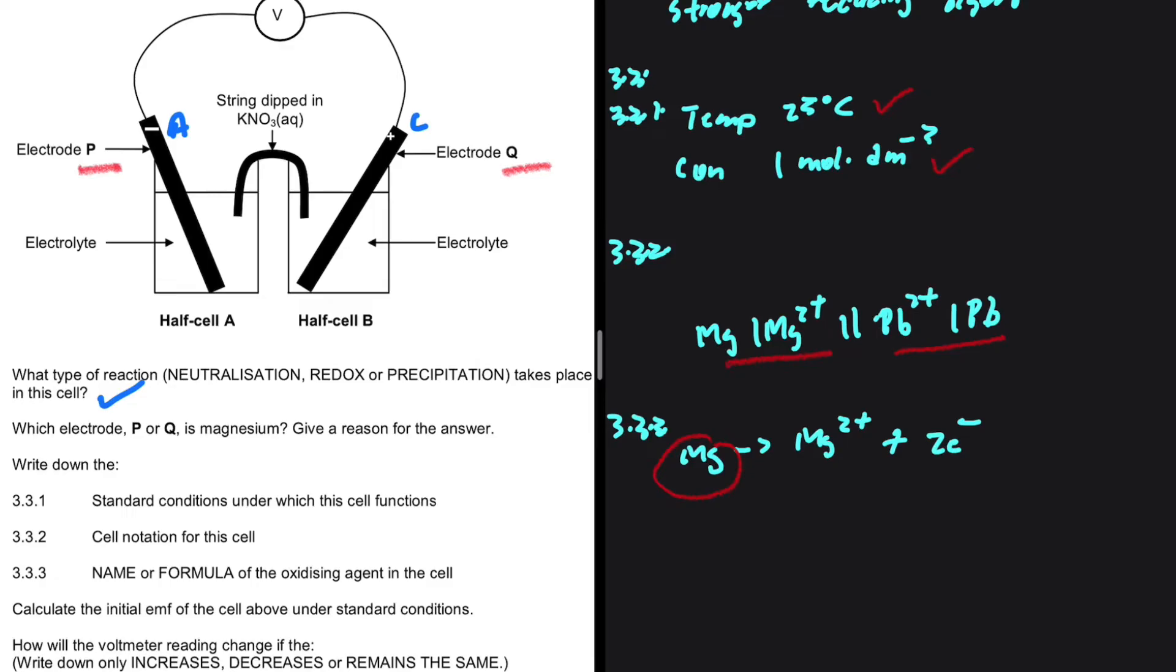And on the other hand, the reduction reaction, we're going to have Pb 2 plus plus 2 electrons to give us lead.